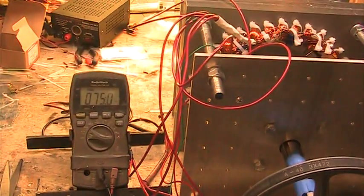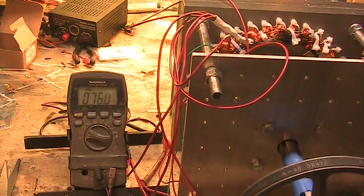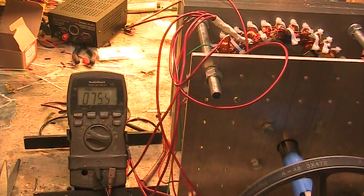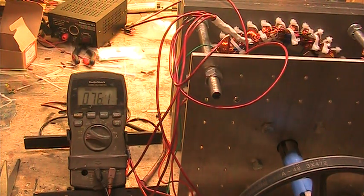The belt has now been attached. That's a half horse motor 1725 RPM. We're going to measure the voltage and we're going to measure the RPM of the generator itself.